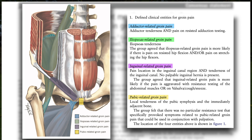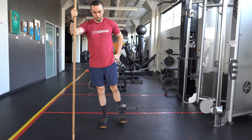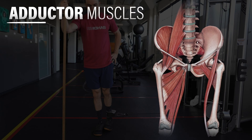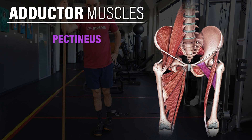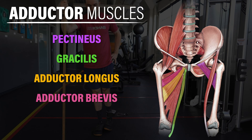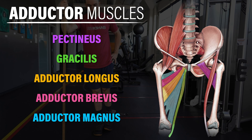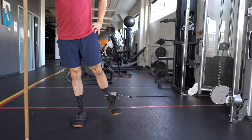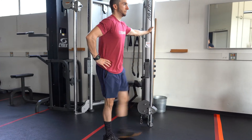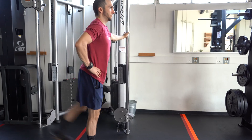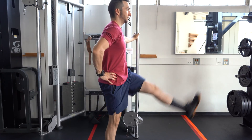Today, I will be focusing on adductor-related groin pain, which is clinically defined by the presence of adductor tenderness and local pain on resisted adduction testing. An injury can occur to one or more of the adductor muscles. These consist of the pectineus, gracilis, adductor longus, adductor brevis, and the adductor magnus. These muscles adduct the hip, but also contribute to varying degrees of hip flexion, extension, and rotation.